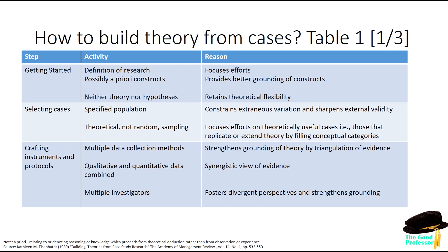When you're developing the instruments and protocols for your study, you've got multiple data collection methods you might use. You're looking at grounding your theory by triangulation of evidence — maybe interviews, maybe archival material, maybe secondary data from the web — really to help confirm that what you're finding is right. You might use qualitative and quantitative data combined to give you a synergistic view of evidence. You might use multiple investigators that will give you different perspectives and interpretations, and therefore strengthen whatever theoretical insights you may develop.